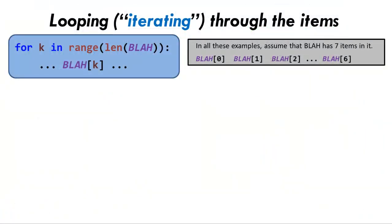The basic iterate-through-a-sequence pattern iterates through the entire sequence from beginning to end. For example, in a sequence with seven items, it would examine item 0, then item 1, then item 2, and so forth through and including item 6, which is the last item of a seven-item sequence. One set of variations on the pattern is to examine only part of the sequence, or to iterate through the sequence backwards. All such variations require only a simple change to the range expression in the basic pattern.